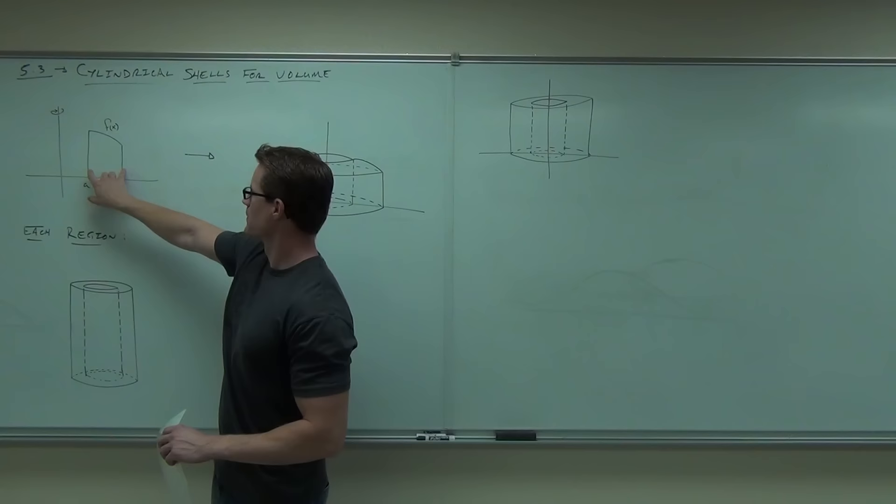We want to match these parts in terms of f(x) and x. For each cylindrical shell, we need the average radius, the height — which will be given by the function — and the thickness. The same function applies to each shell, just with different radii.